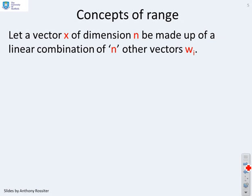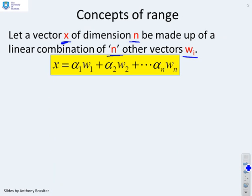Concepts of range then. This is some background material. If you have a vector x of dimension n, and you make up this vector as a linear combination of n other vectors wᵢ, you can see x is made up of α₁w₁ all the way up to αₙwₙ.